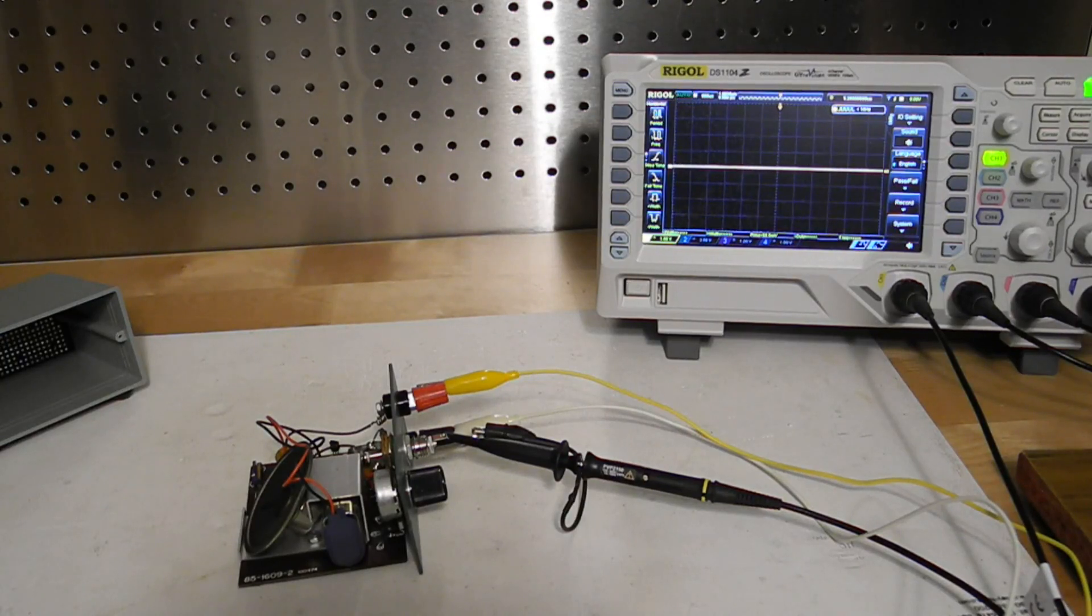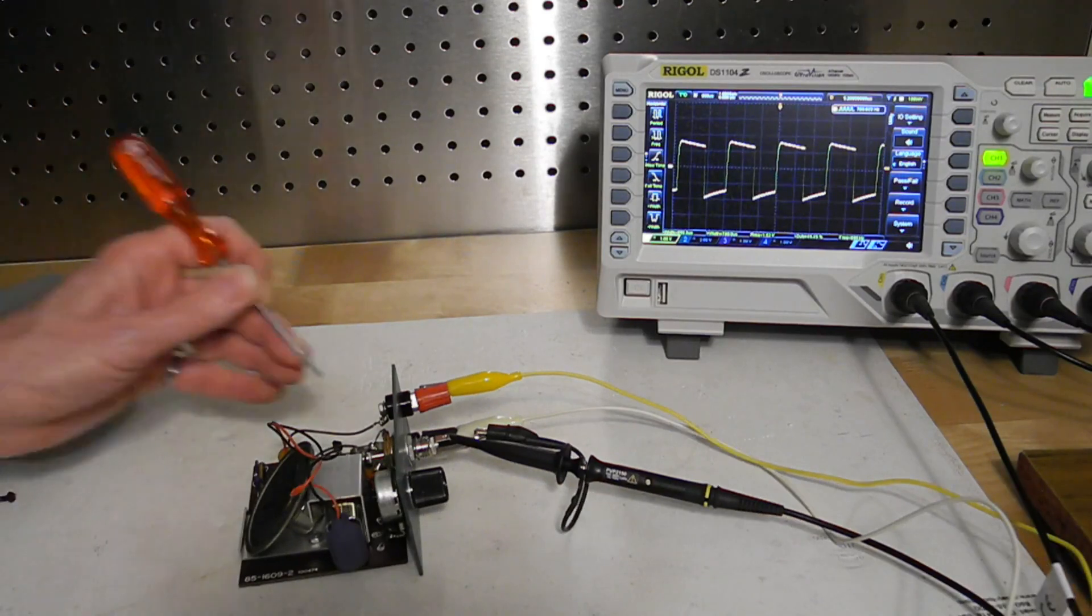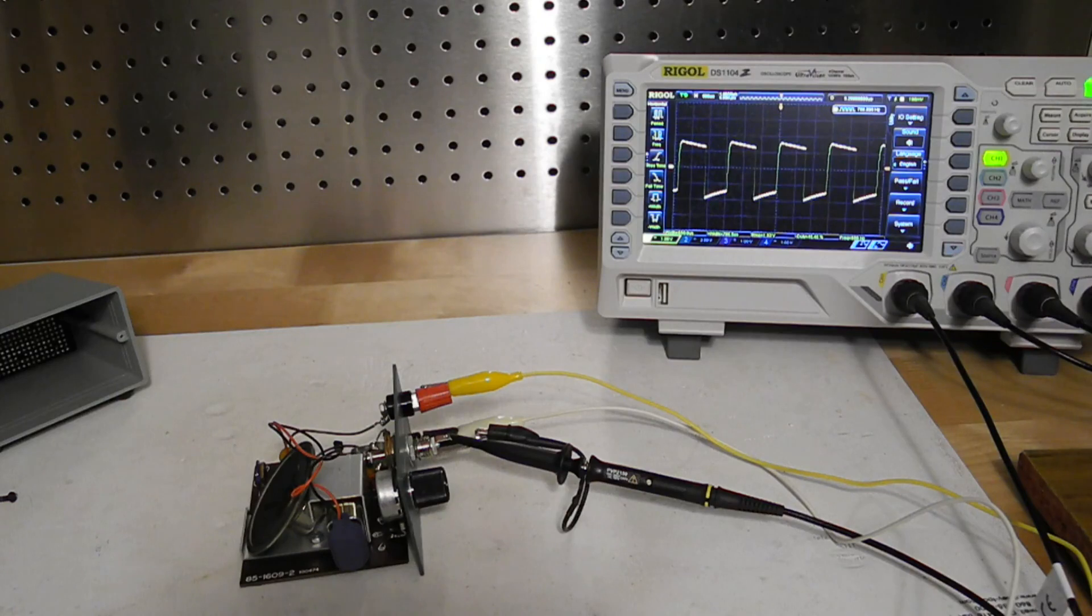We can see the output waveform on this oscilloscope. It's almost a square wave into an open circuit but changes when a load such as the speaker or headphones is connected. For this application there's no need for the output to be a pure sine wave. It just needs to be a tone that's reasonably pleasing to the ear.